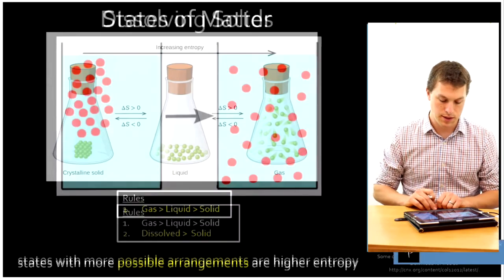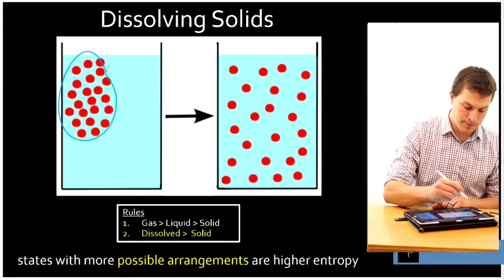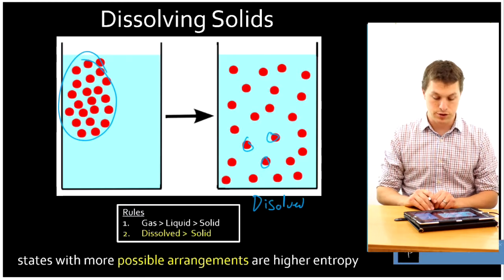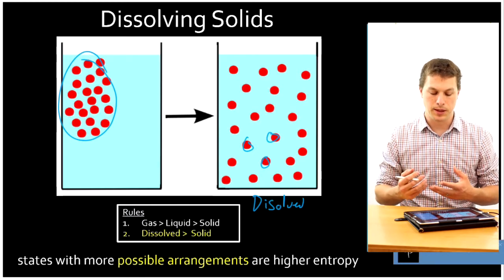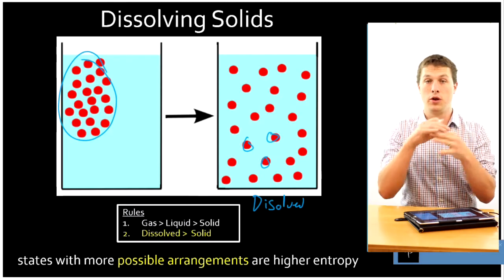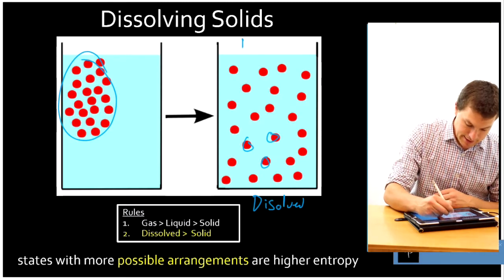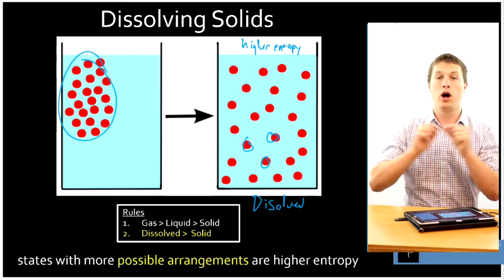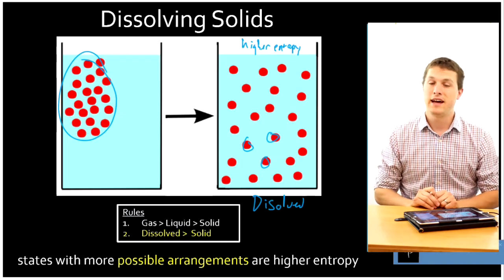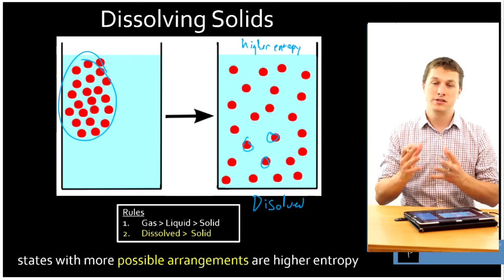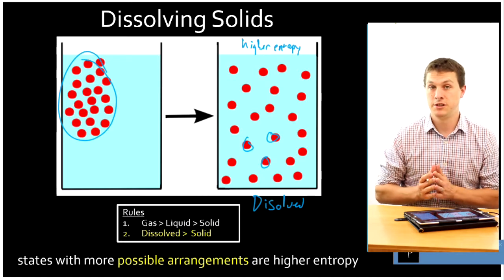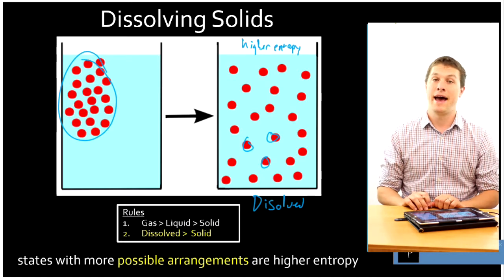Let's take a look at dissolving something. Here's a solid before dissolving, and over here it's been dissolved. As it dissolves, all of my molecules split up and are floating all around in solution. Which one has higher entropy — the water and molecules separately, or the water and molecules interspersed? Clearly the dissolved side has higher entropy, because those molecules can be all over the place. More possible arrangements — that's what makes that a powerful way to think about entropy.